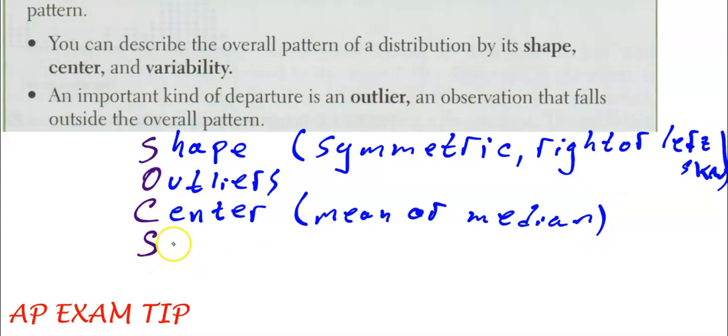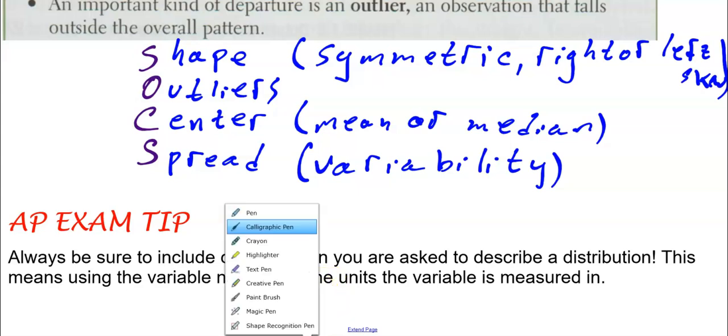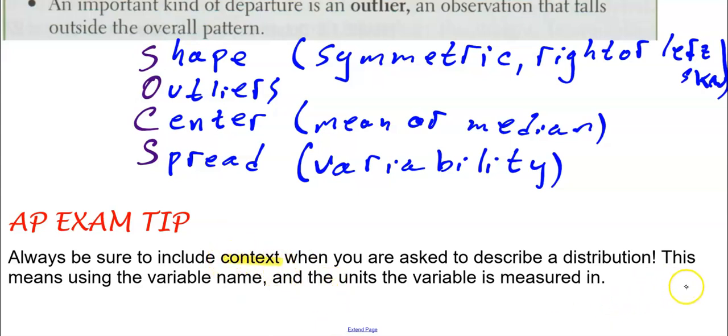C is center. You're going to describe the mean or the median. And S is our spread—spread, they called it variability up here—from what value to what value.